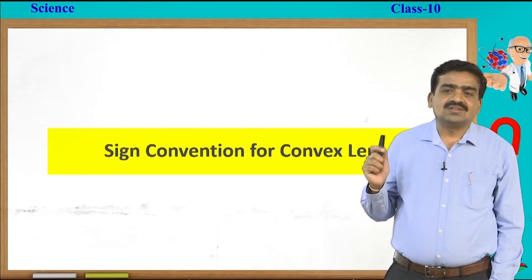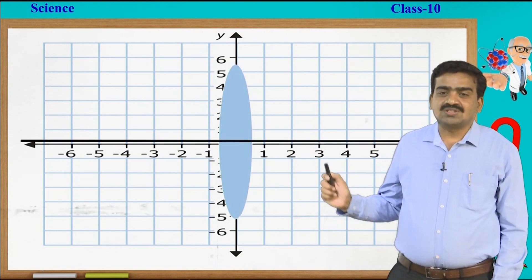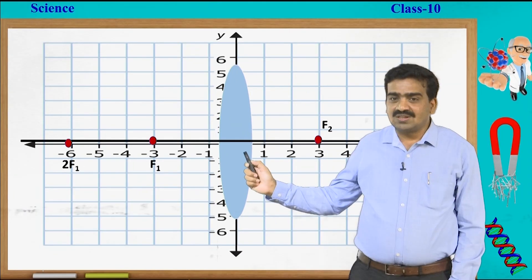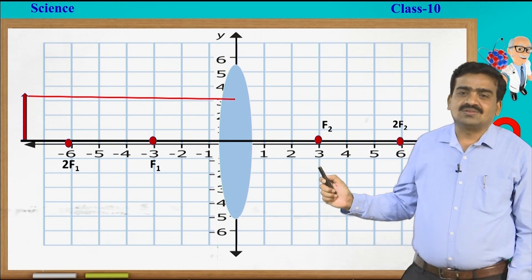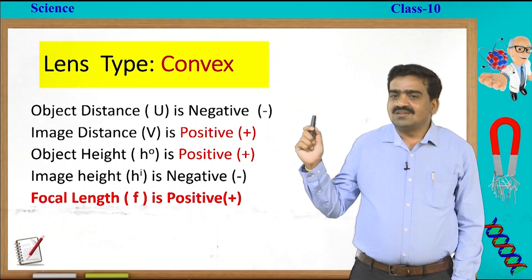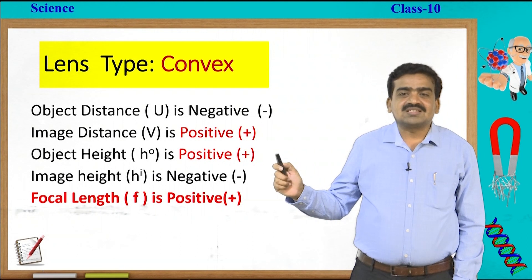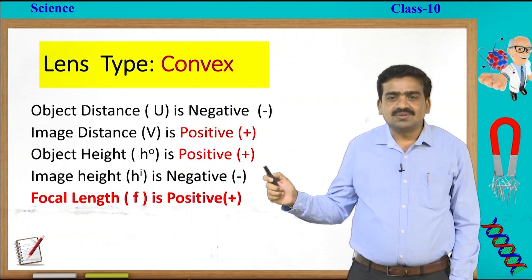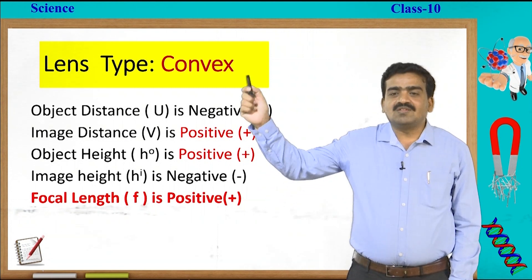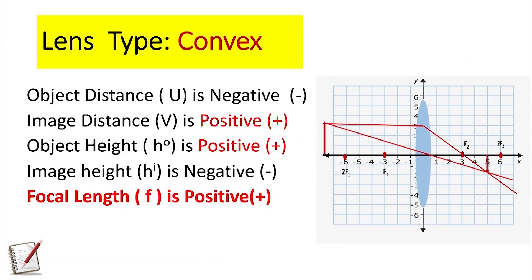Let us know the sign convention for convex lens. Remember the Cartesian plane as well as the position of the convex lens, the object, and the image. With the help of the diagram, we can list the following: object distance u is negative, image distance v is positive, object height is positive, image height is negative, and focal length of the convex lens is positive. Note down all these things based on the picture shown.